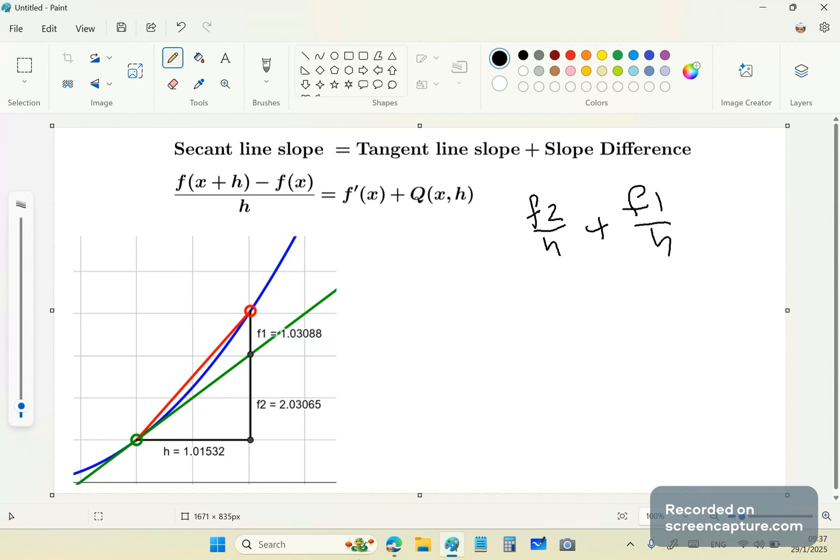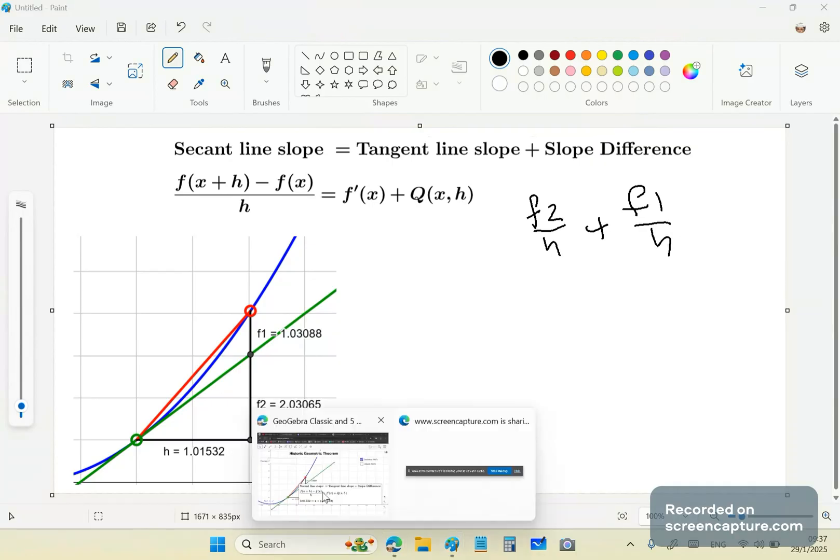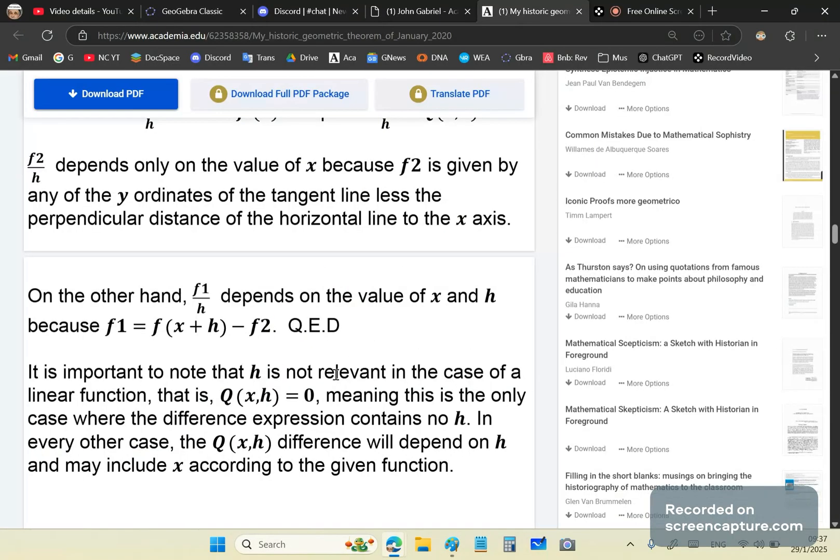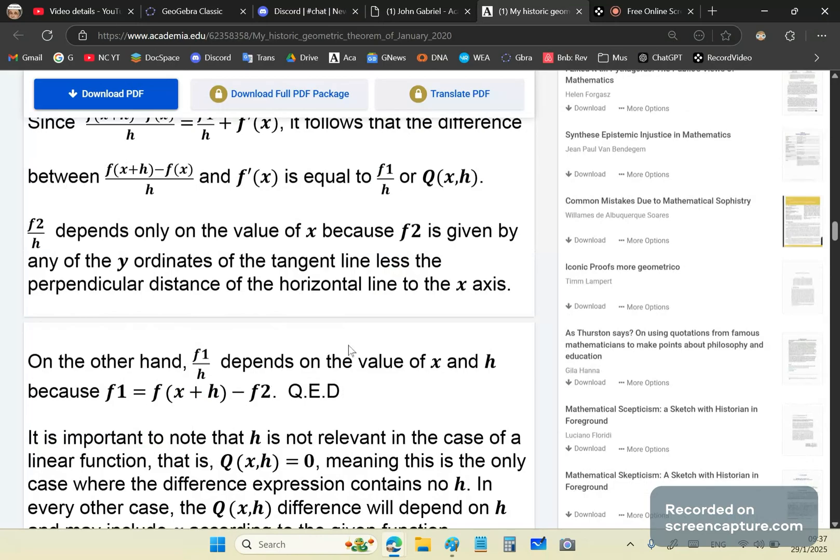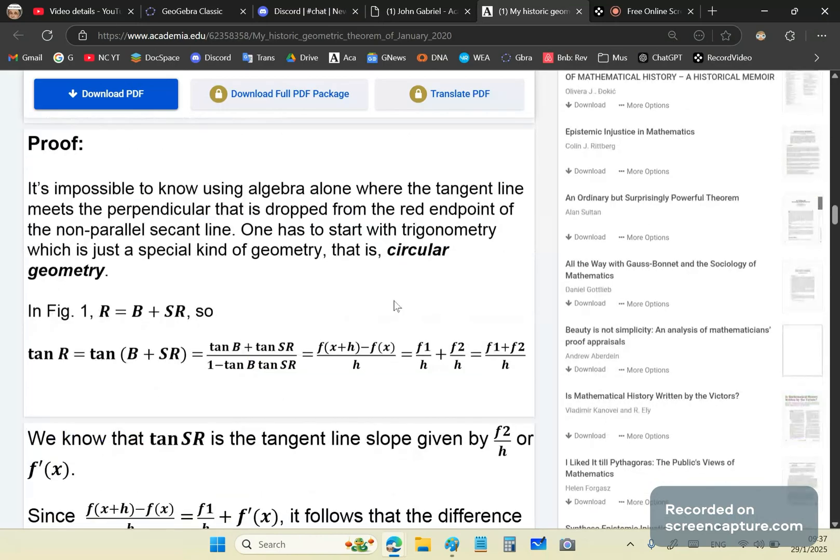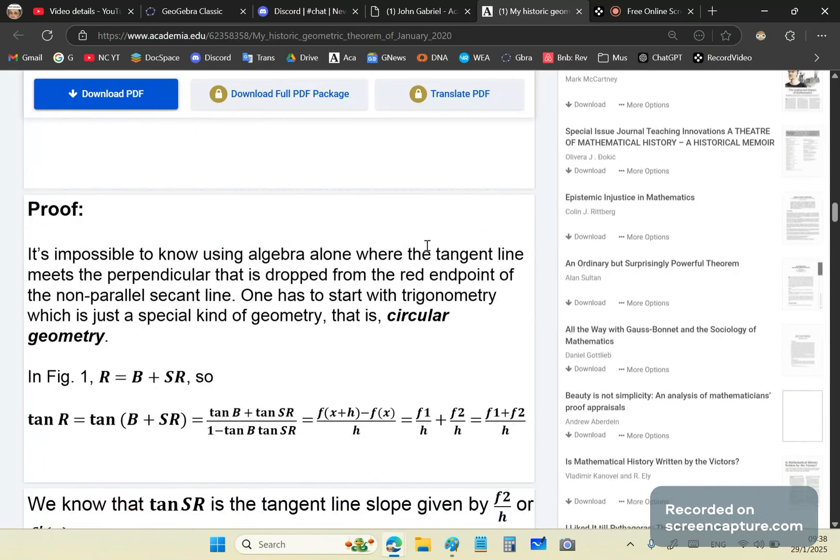Which means you could effectively write this as, geometrically, by the way, this is geometric, you morons. It's not something that you can just do out of your asses. It's f2 over h plus f1 over h. Why is it that? Well, you need to get off your fat asses and go and study this article. You need to study this. Otherwise, you won't understand.